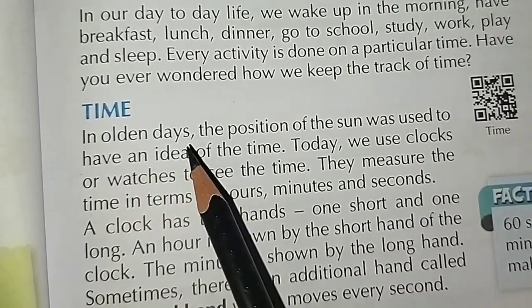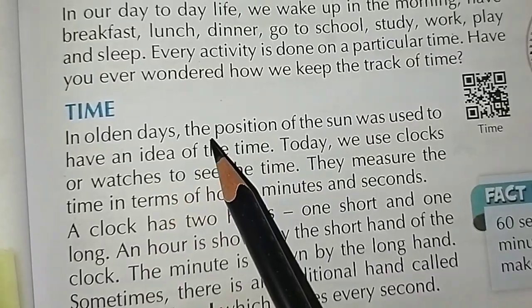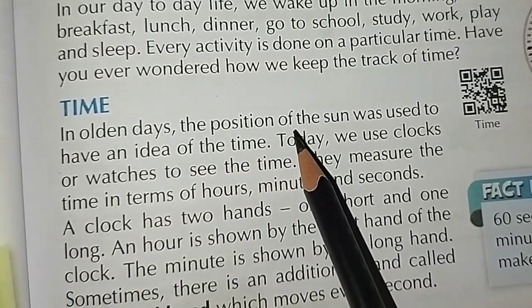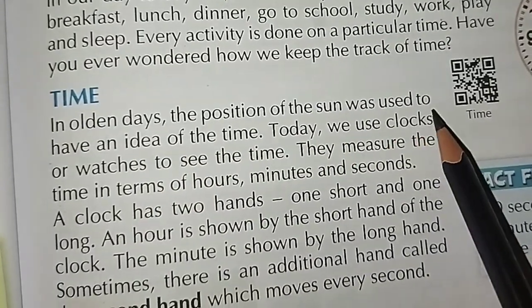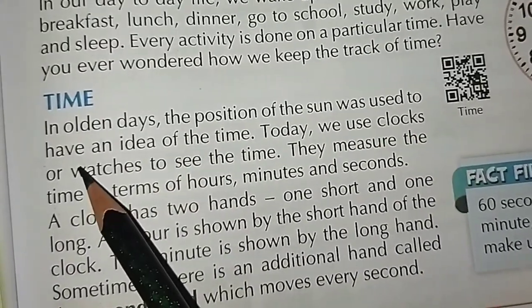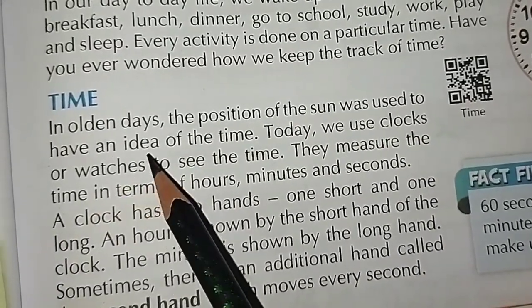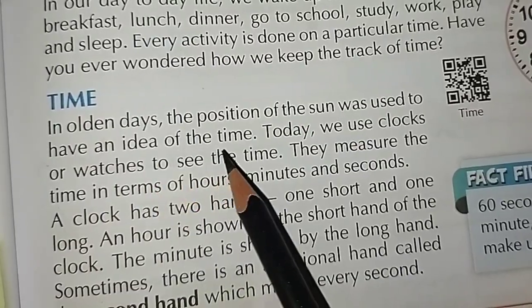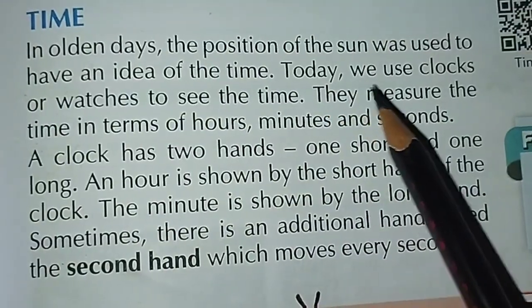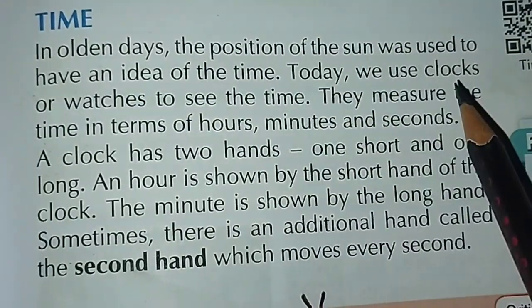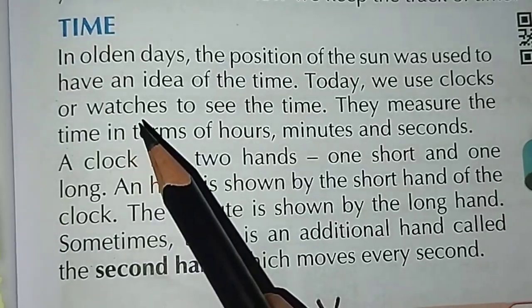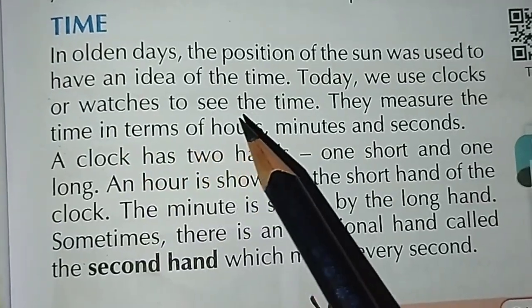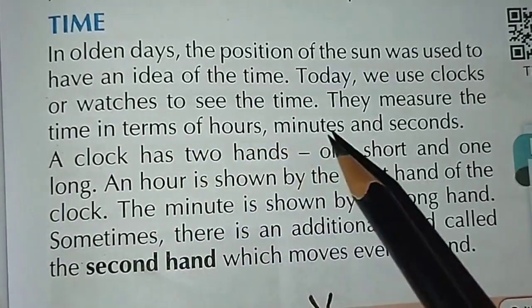In olden days, the position of the sun was used to have an idea of the time. Today, we use clocks or watches to see the time.